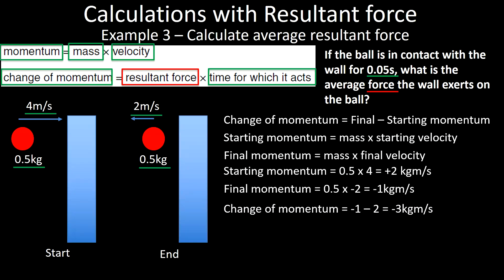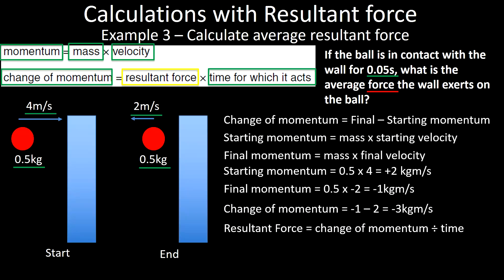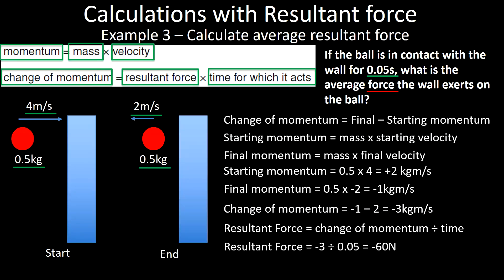We now have the change in momentum and the time, so we rearrange for resultant force: change in momentum divided by time. Minus 3 divided by 0.05 seconds gives a force of minus 60 N. The negative sign is meaningful here — the wall pushes the ball to the left, which is the negative direction in our problem, so the negative answer is correct. That's three examples of complex resultant force calculations. Watch out for unit conversions and keep track of the directions of velocities and momenta to get these completely right.